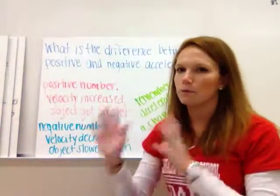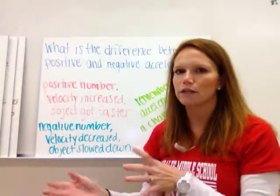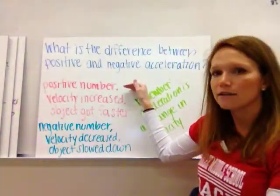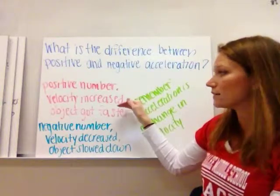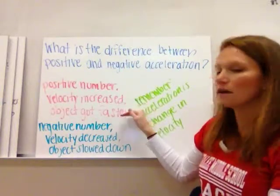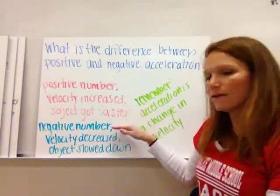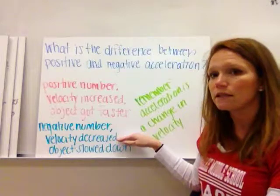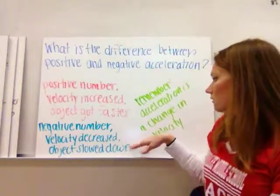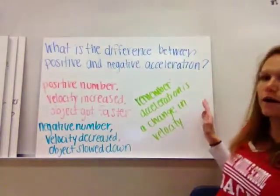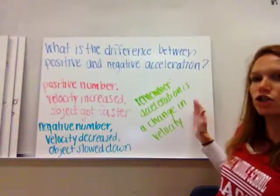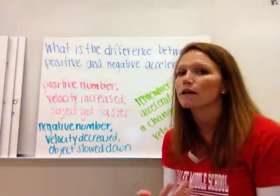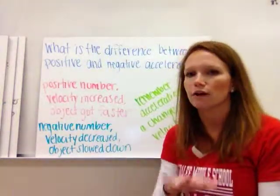So what's the difference between positive acceleration and negative acceleration? If it's a positive number, the velocity increased — the object got faster. If it's a negative number, the velocity decreased — the object slowed down. Remember, acceleration is a change in velocity. You can have the same speed but a different direction, and that's still a change in acceleration.